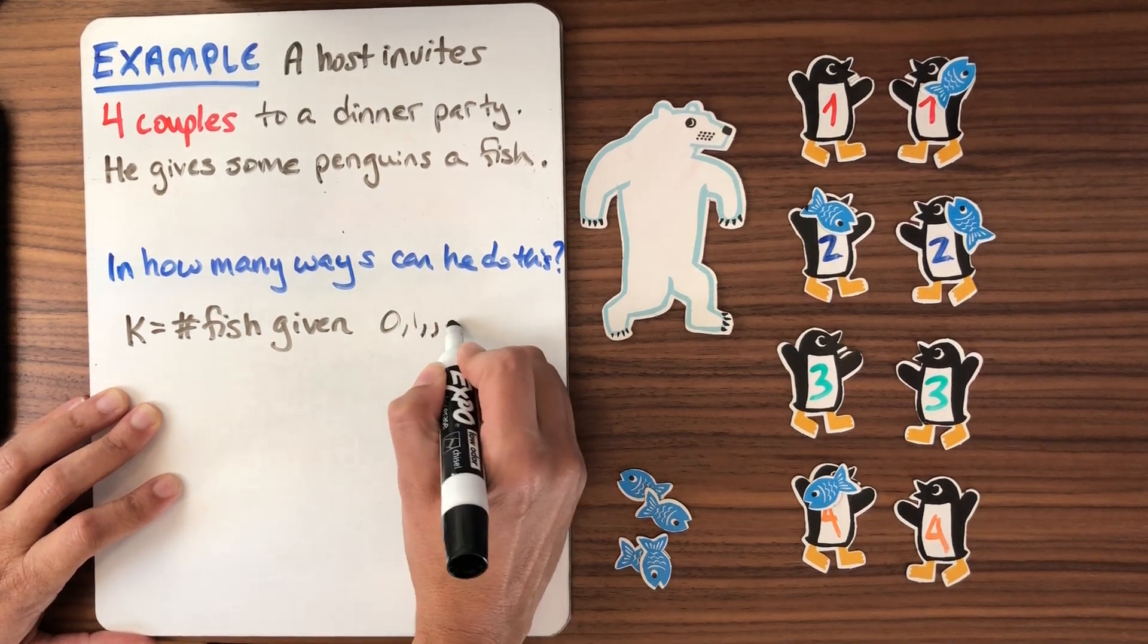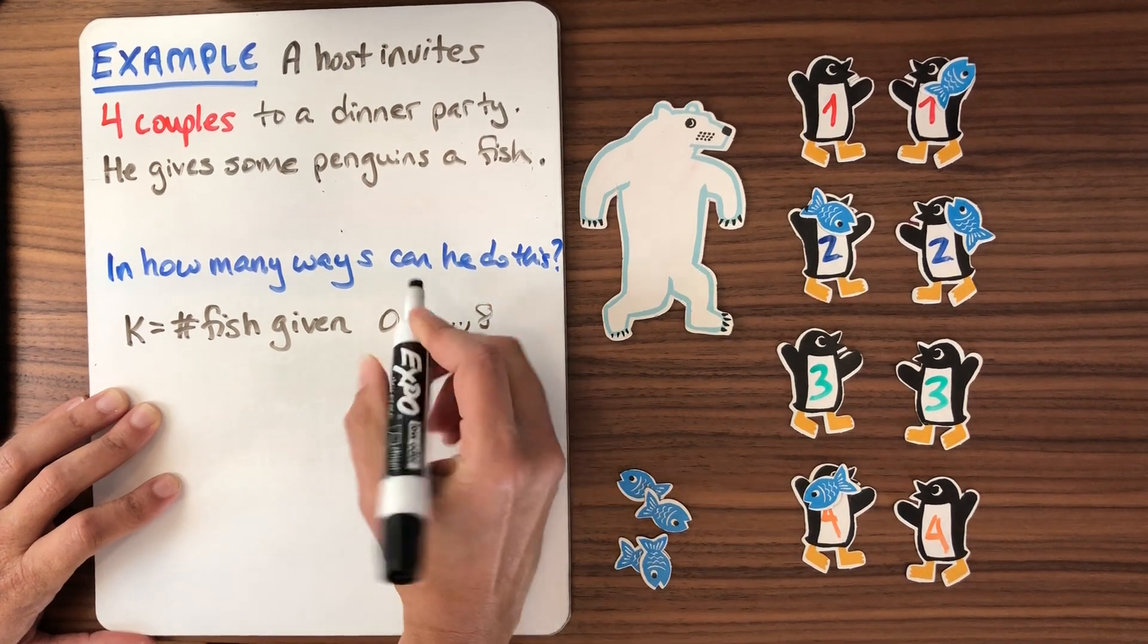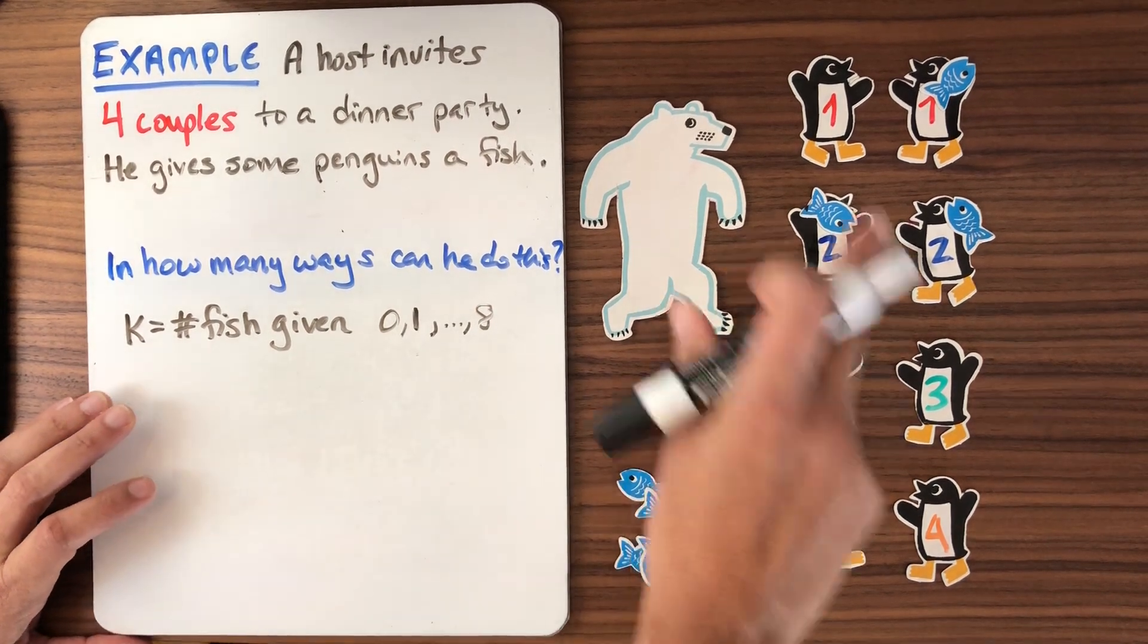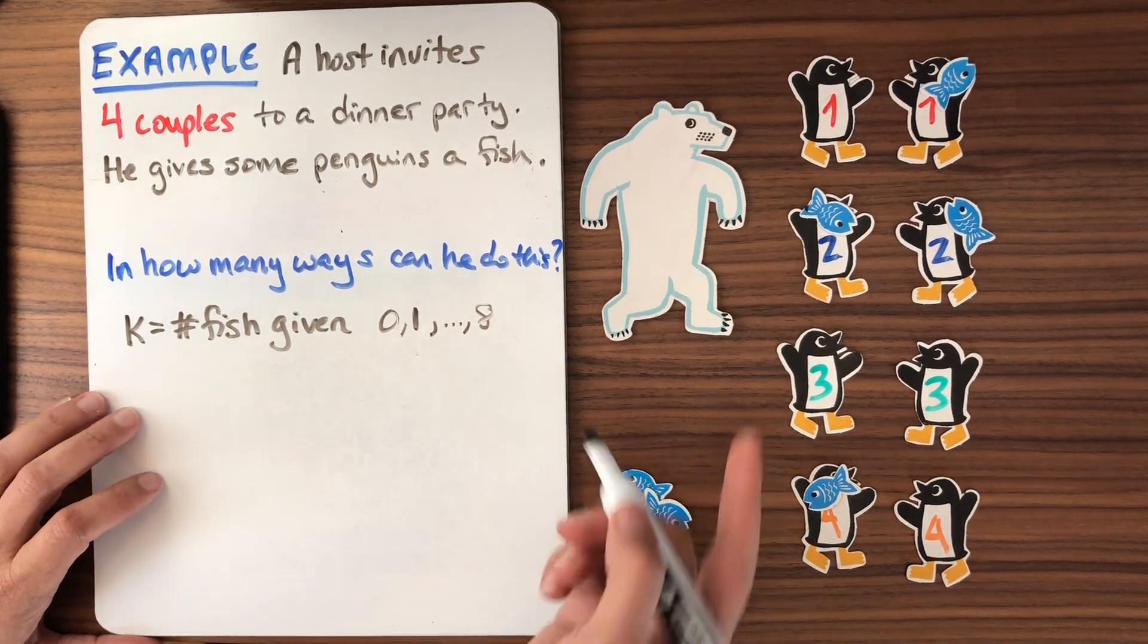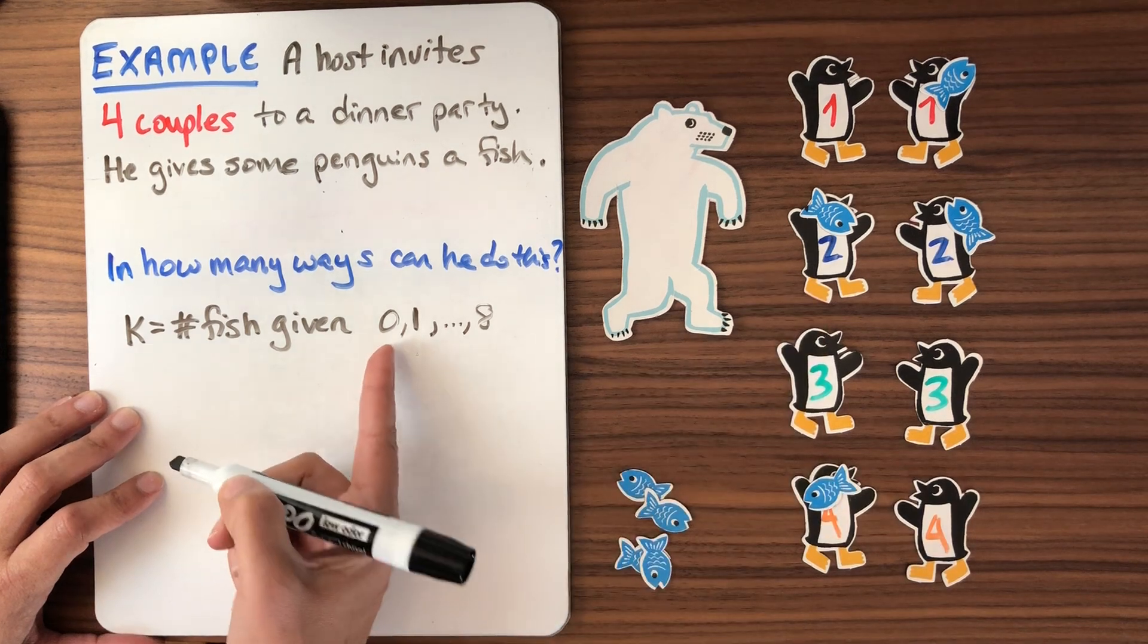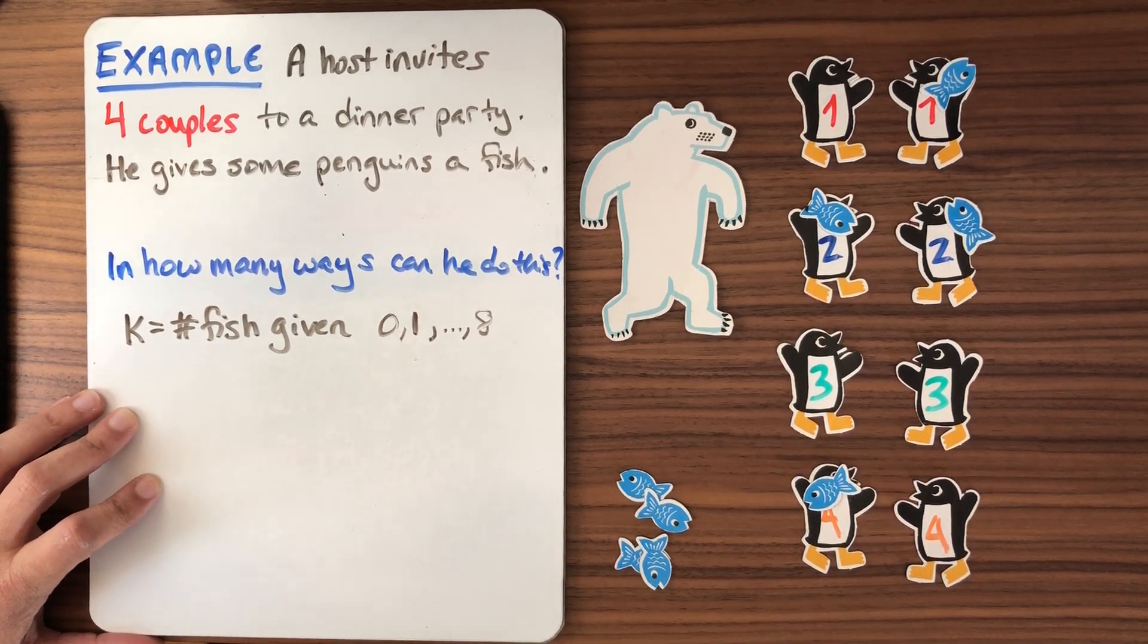One penguin a fish, all the way up to the most number of fish that he could give out, which is eight. He could give one to each of the penguins. So we could write down his solution there. And when he does it, if he gives out zero fish, then he has to choose which of the zero penguins to give it to. Well, there's one way to do nothing, right?